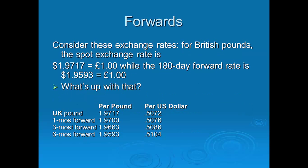For the British pound, today's spot exchange rate is 1.9717. The one-month forward is 1.97, the three-month forward is 1.9663, and the six-month forward is 1.9593. Looking at these numbers, over the six-month period you can expect the US dollar to strengthen against the British pound. The lower six-month forward price of 1.9593 may be driven by interest rate differentials between the US and the UK.